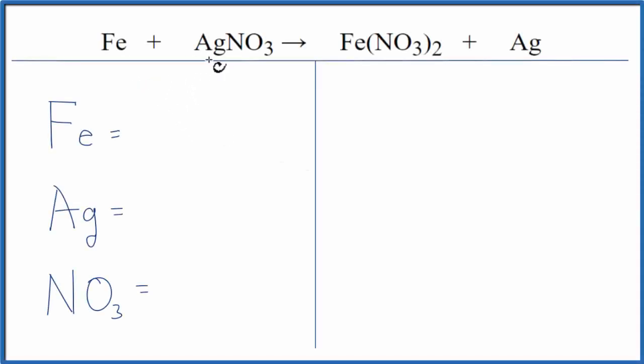To balance this equation, Fe plus AgNO3, that's iron plus silver nitrate, we're going to use a little bit of a trick here. Since we have this NO3, it's called the nitrate ion, it's a polyatomic ion, and it sticks together really well.